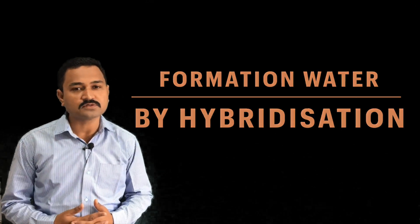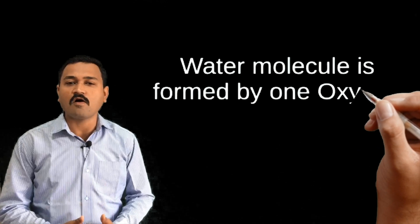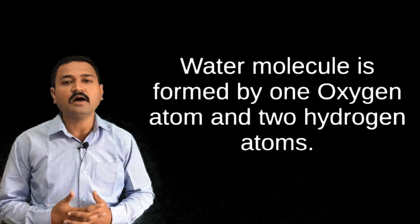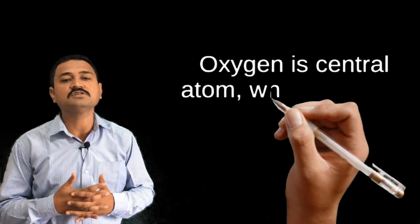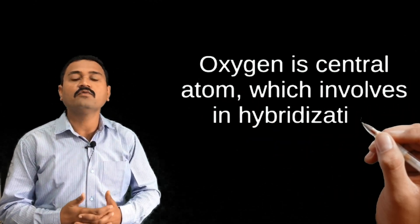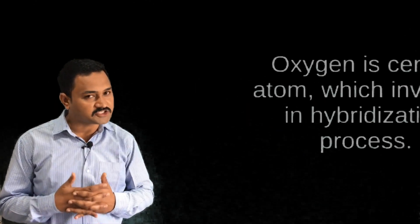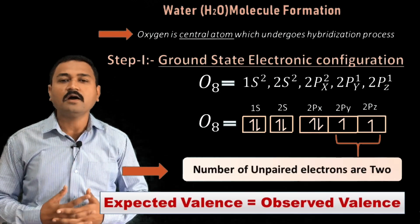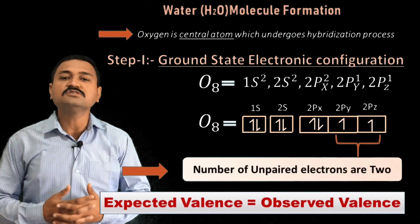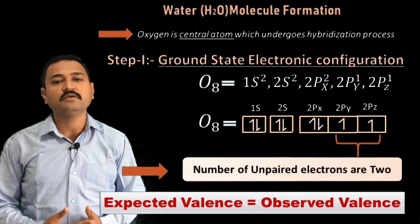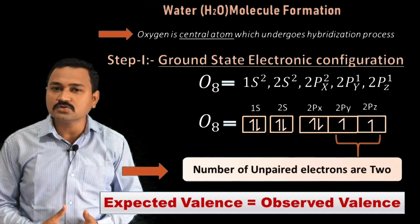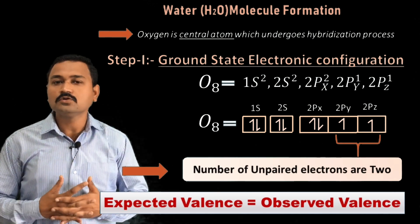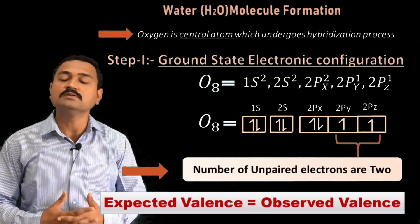The water molecule is formed by one oxygen atom and two hydrogen atoms, in which the oxygen atom is the central atom which undergoes the hybridization process. The atomic number of oxygen is eight, so its ground state electronic configuration will be: 1s², 2s², 2px², 2py¹, and 2pz¹.